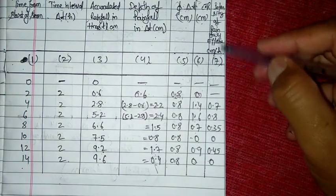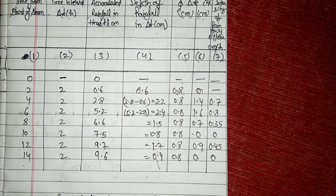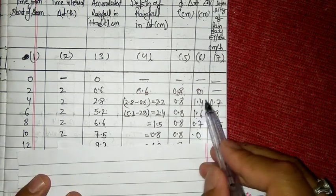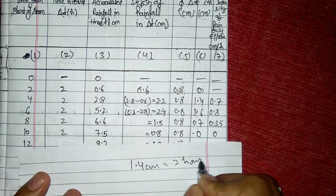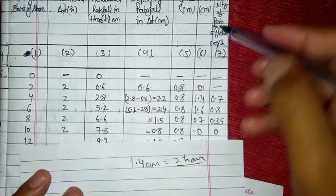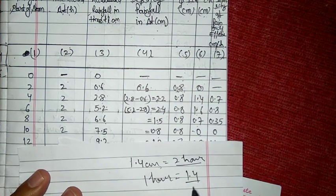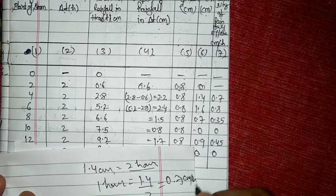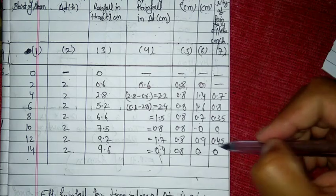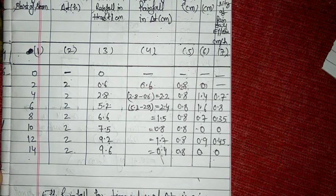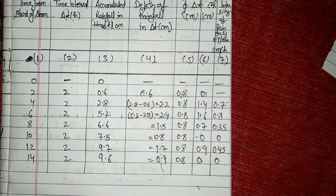For column 7, we calculate the intensity of effective rainfall in cm/hr. Since the effective rainfall values are over a 2-hour duration, we divide by 2 to get hourly intensity. For example, 1.4 ÷ 2 = 0.7 cm/hr. The resulting intensity values are: 0.7, 0.8, 0.35, 0, 0.45, and 0 cm/hr. This table is needed to calculate effective rainfall for any given storm.